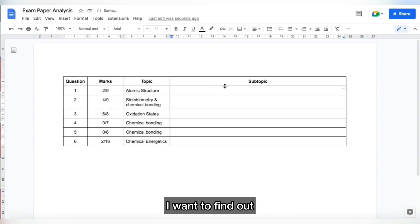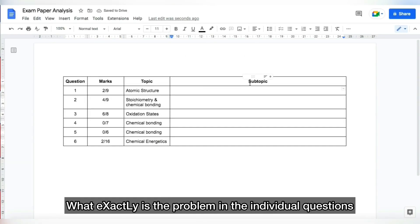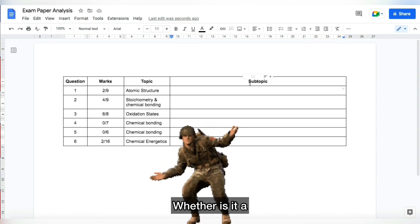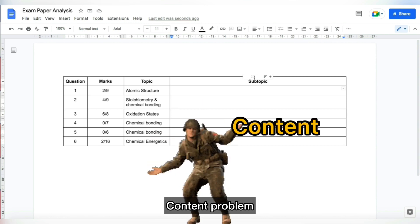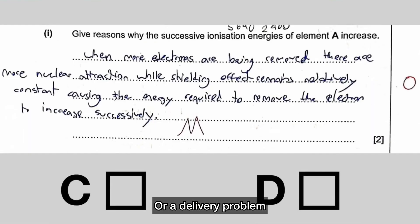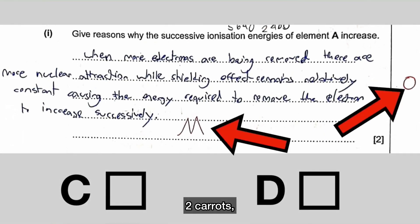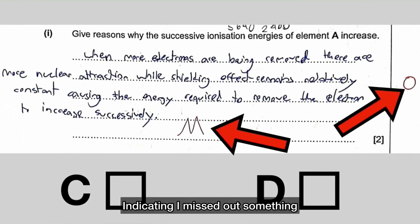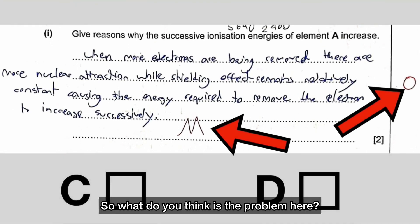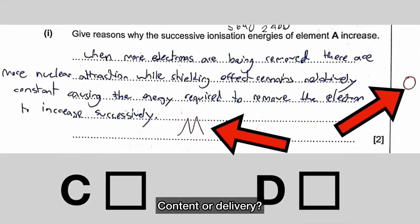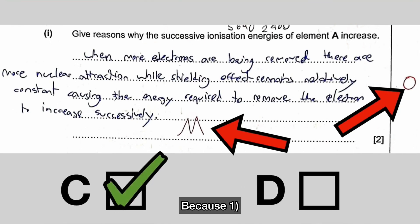Now I want to find out what exactly is the problem in the individual questions — whether it's a content problem or a delivery problem. For Question 1A Part 1, I got 0 out of 2, with 2 carets indicating I missed out something. So what do you think is the problem here — content or delivery? I will categorise this as a content problem.